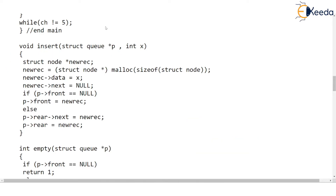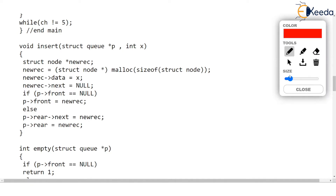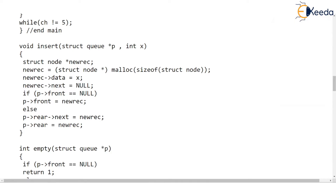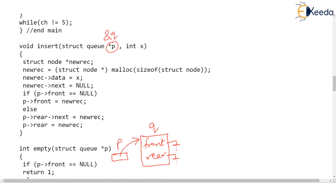Let's execute the insert code line by line — just follow the lines, draw the diagrams, and understand what assignments are made. Q has front and rear, both null. P stores the address of Q, so P points to Q. X is 10. When you run this code, there is one more pointer, new_rec, declared locally inside insert — it is a node pointer, so it can point to a node.